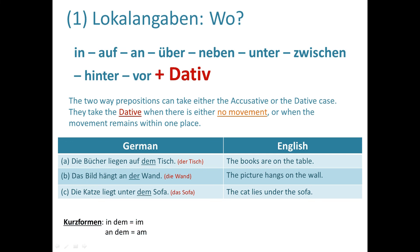The important thing to keep in mind is that these prepositions take the dative when there is either no movement, or when movement remains within one place. As we saw in all nine examples, the position was still — the girl was behind the curtains, the mouse was sitting next to the cheese, but there was no movement.